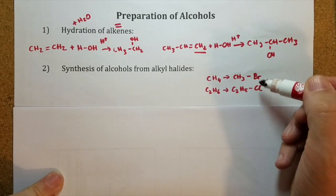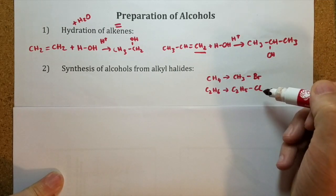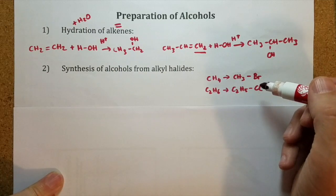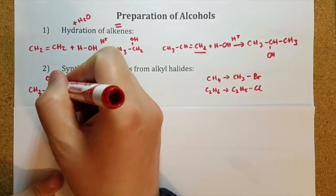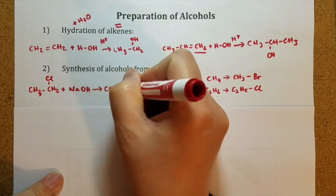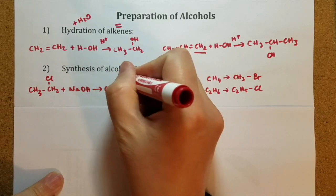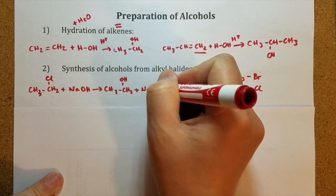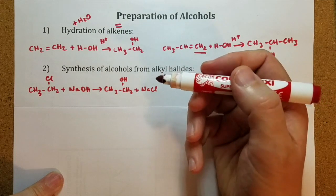When you react these alkyl halides with a strong base like sodium hydroxide, an alcohol will be produced. This is a substitution reaction.